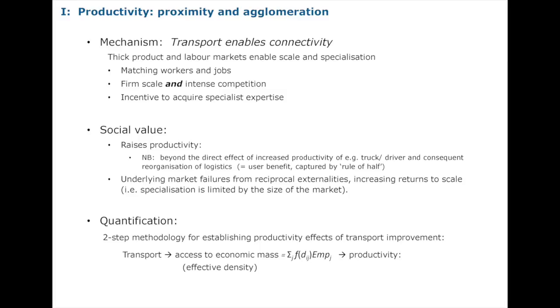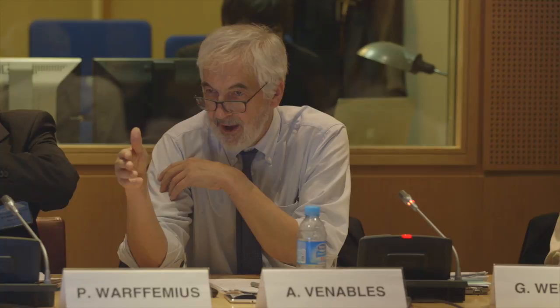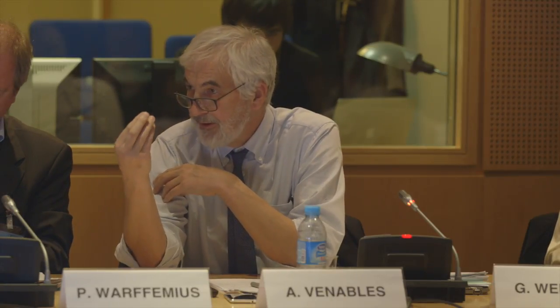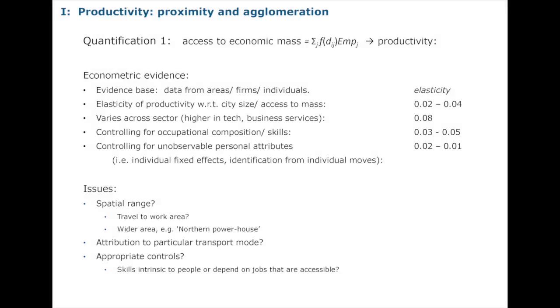To apply that methodology: taking the right-hand stage — how access to economic mass relates to productivity — we have a well-established, robust, high-quality econometric literature investigating that relationship. At the level of areas, firms, and individuals, this literature generates an elasticity of productivity with respect to city size or access to mass of around 0.0-something — which is a big number. Even for transport improvements that have a non-trivial effect on the number of people employed in central London, the number is big enough to generate a productivity kick.